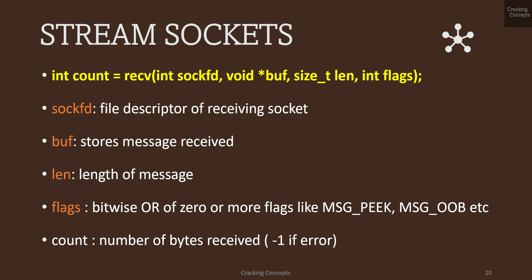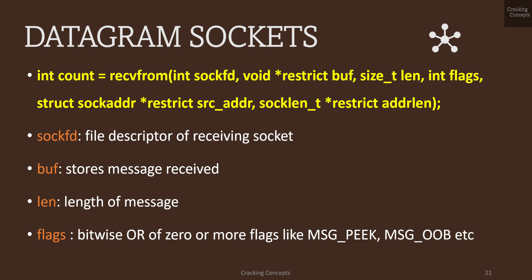The receive function takes a file descriptor, buffer, length of the buffer, and flags. Two flags discussed here are MSG_OOB, which indicates receiving out-of-band data, and MSG_PEEK, which causes the receive operation to return data from the beginning of the receive queue without removing it. The count variable stores the number of bytes received; on error the value is minus 1. For datagram sockets, recvfrom has two extra fields: source address and source address length.